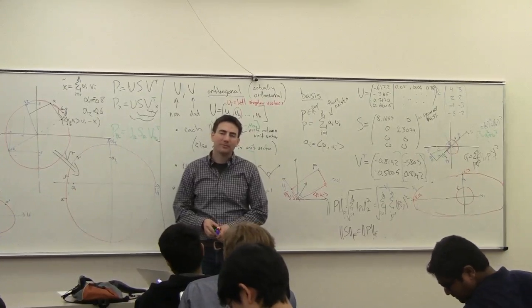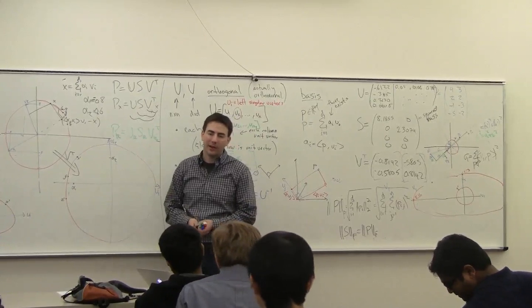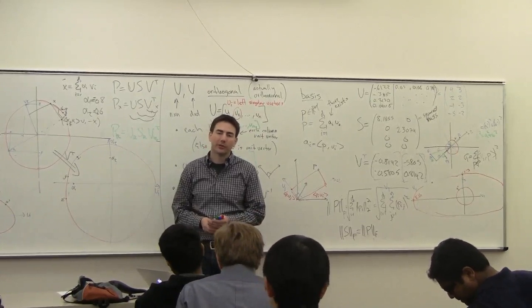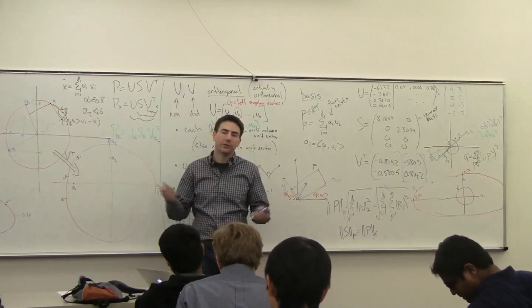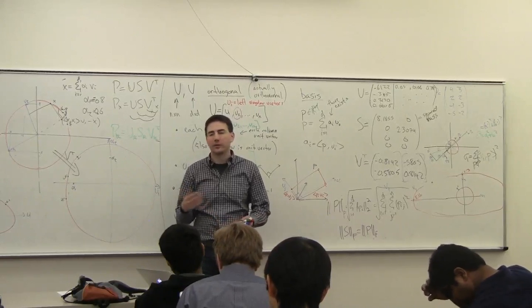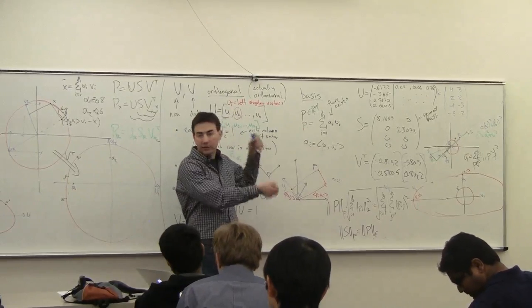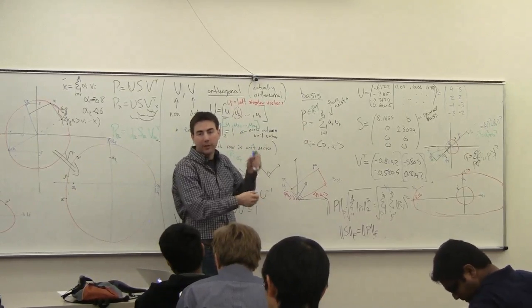So there's no, there's not one right way to pick K, right? It's the same problem as in clustering. You need it, how many clusters do you pick? So you can use some of the same techniques where you can look at these values that are already sorted for you, and see when they start to drop off.